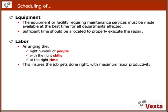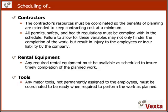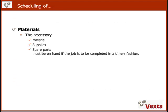Let's look at the effects scheduling has on different areas. The equipment should be shut down at the best possible time for all involved parties, and sufficient time should be allocated for proper execution. On the labor side, you want to arrange the right number of people with the right skills at the right time to optimize resource utilization. Scheduling of contractors allows optimization of contractor utilization and minimization of contractor cost. The same applies to rental equipment, which only needs to be rented for the time it is needed. Major tools like cranes must be coordinated to be available when needed. Scheduling prevents conflicts on one hand and underutilization on the other. Necessary materials, supplies, and spare parts need to be available to execute a maintenance task in time.